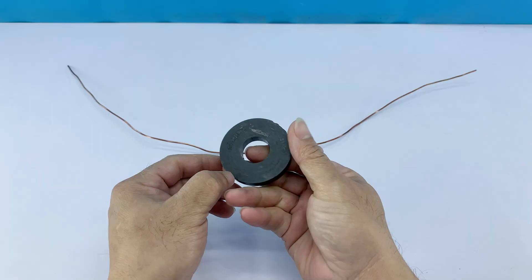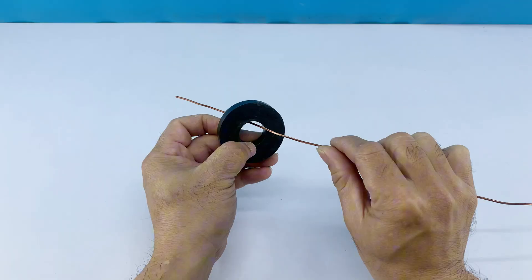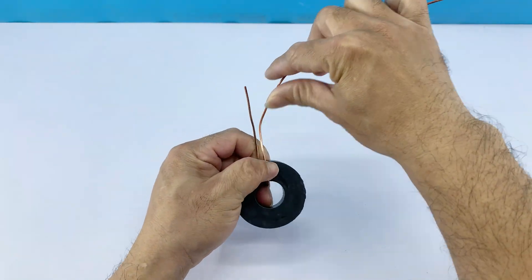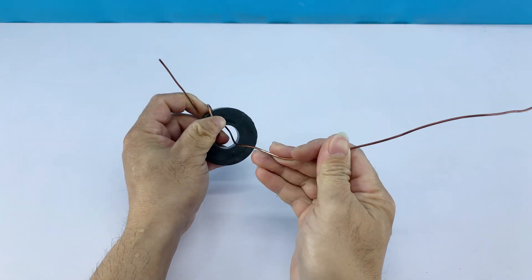I'll carefully begin winding the copper wire around one of the ferrite rings. This creates an electromagnetic coil, which is fundamental to how our new tool will function, as it will generate an alternating magnetic field when current passes through.